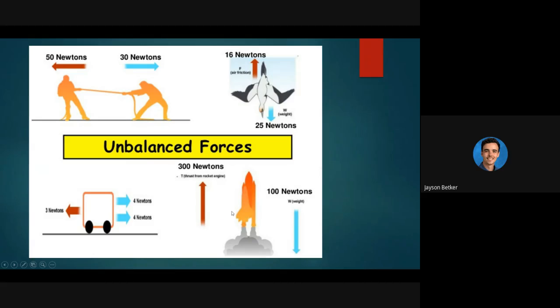300 newtons of thrust upwards on this rocket engine and only 100 newtons of weight. This one should have way more newtons acting upwards but the idea stands that that rocket would end up accelerating upwards. And then you've got this one here, a couple forces acting, so we add these up, four plus four gives us a total of eight newtons acting right. We only have three newtons acting to the left, that would mean that we have an acceleration of five newtons acting to the left.